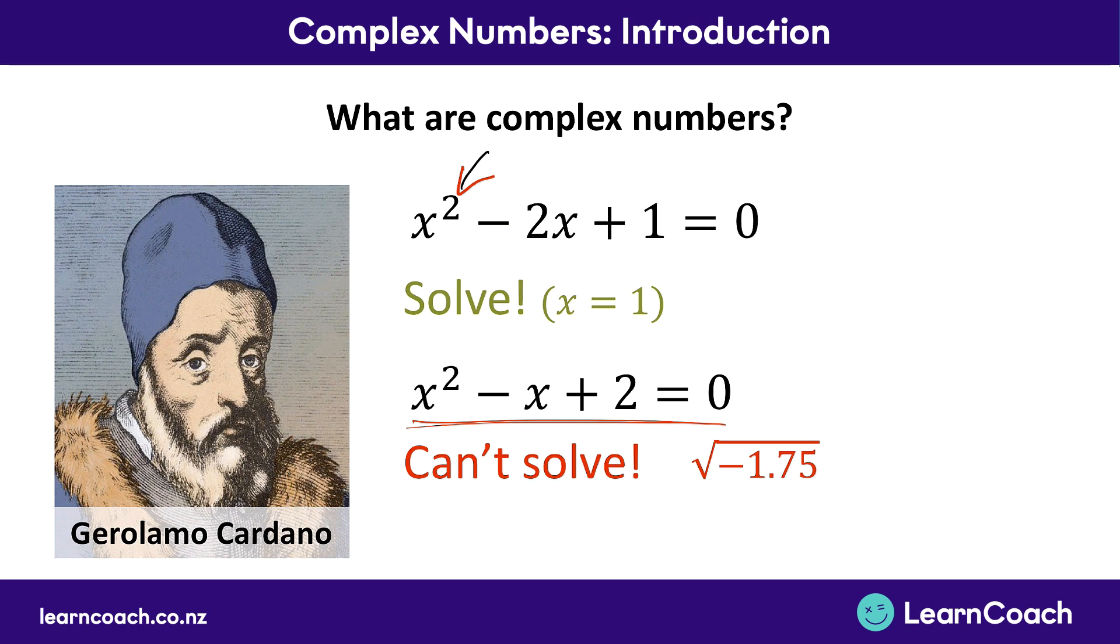So for hundreds of years mathematicians couldn't do anything about it until this guy kind of figured, well, imagine if we separate this out. Now the square root of negative 1.75 is the same as saying square root of 1.75 multiplied by the square root of negative 1. So he told his mathematician friends, just imagine that this negative 1 here is a number, and we can call it i. If we call it i and just ignore the fact that we can't have the square root of a negative number for now, we can actually solve all kinds of polynomial equations.